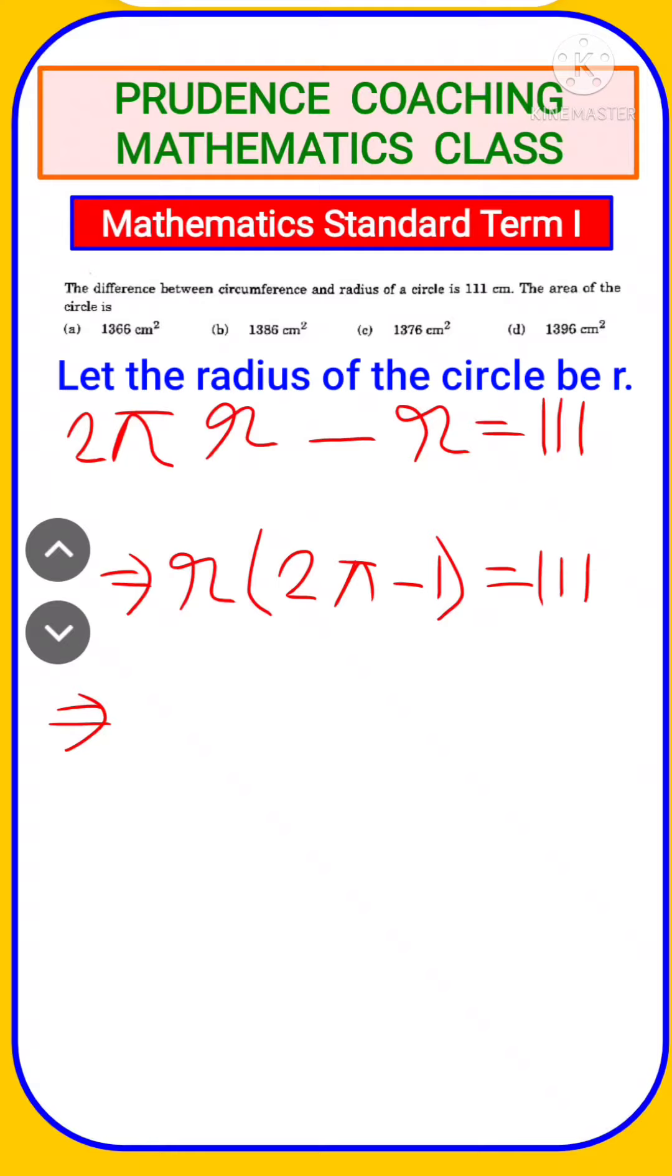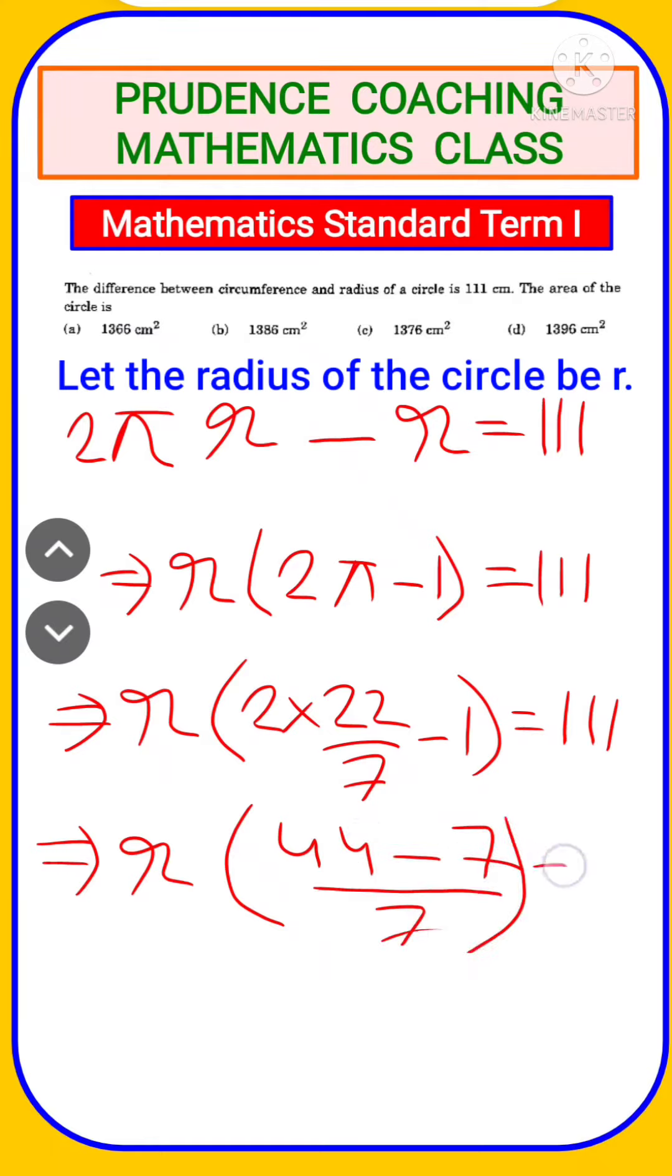We can further solve this. We will get r into 2 into 22 by 7 minus 1 equal to 111. Further solving, we will get r into (44 minus 7) by 7 equal to 111.